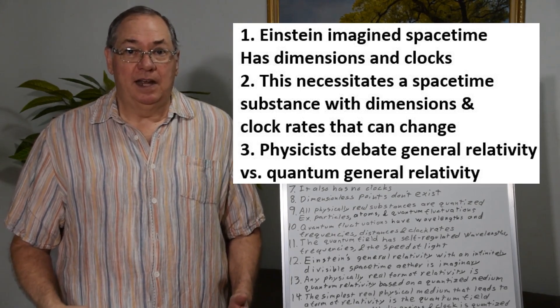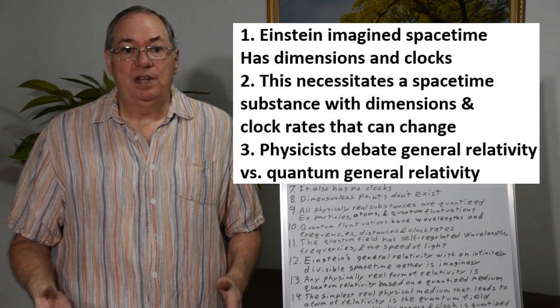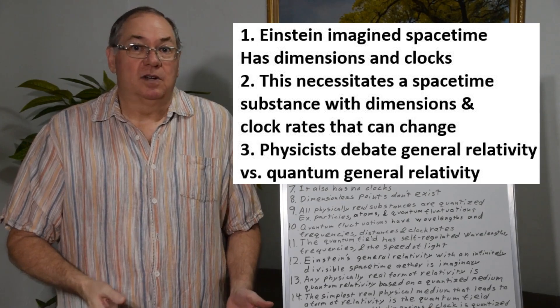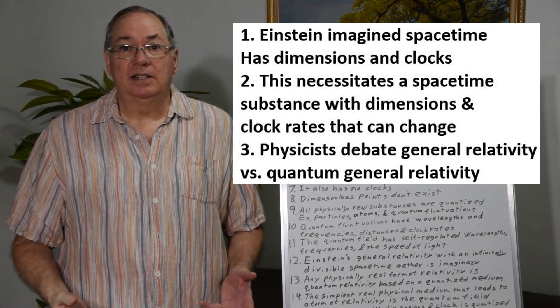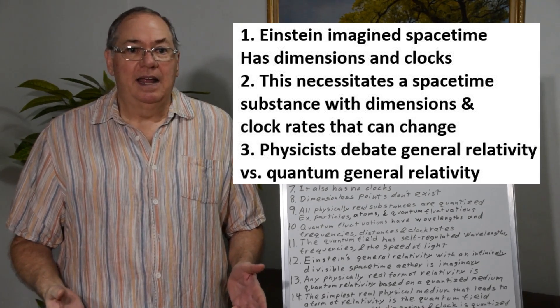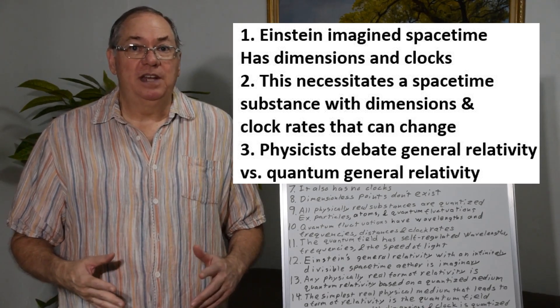But Einstein's space-time imagined that there's real dimensions and real clocks or clock rates. And those dimensions and clock rates had to come from somewhere and they also had to be able to be changed.